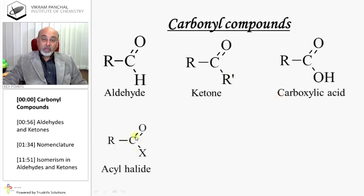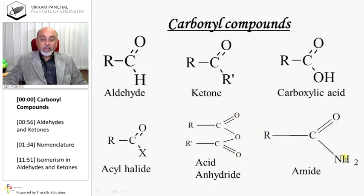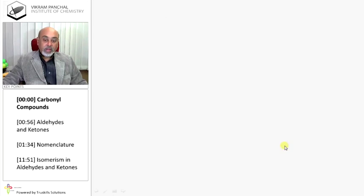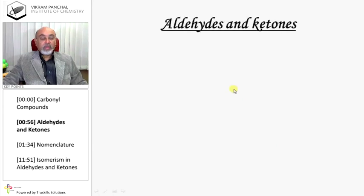If a halogen is attached to the C of C=O, then it is called an acyl halide or acid halide. If an OCO group is attached to C=O, it is called an acid anhydride. If NH2 is attached to C=O, it is known as an amide. If OR is attached to C=O, then it is known as an ester.